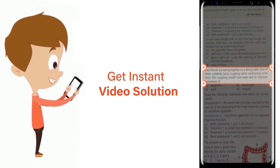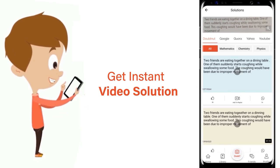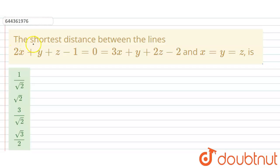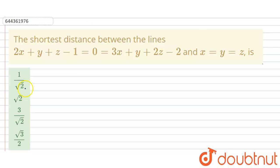Hello students, today's question is the shortest distance between the lines: 2x + y + z - 1 = 0 = 3x + y + 2z - 2, and x = y = z. We have to find the shortest distance between these planes.